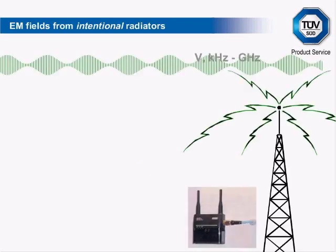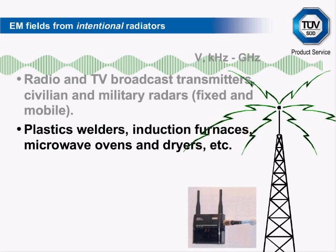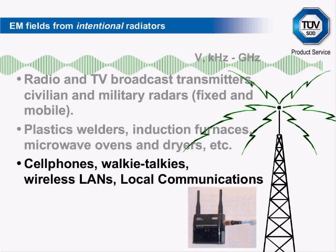Examples of intentional radiators include radio and TV broadcast transmitters, civilian and military radars — which can be both fixed and mobile — equipment that needs to generate a frequency as part of its operation such as plastic welders, induction furnaces, microwave ovens and dryers, and localised communication devices such as cell phones, walkie-talkies, and wireless LANs. These are all intentional radiators in that by their intended operation they will emit RF.